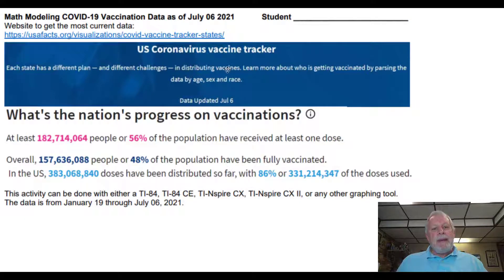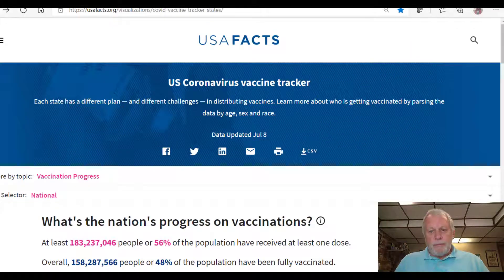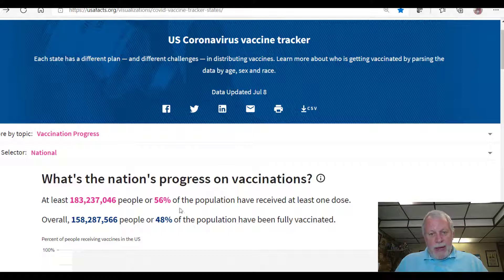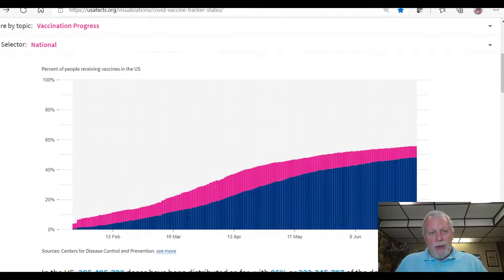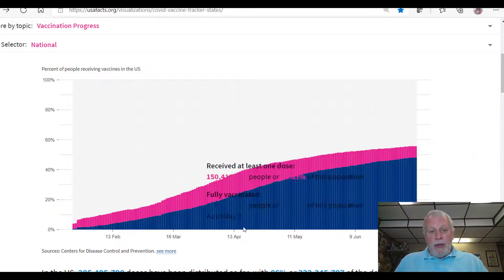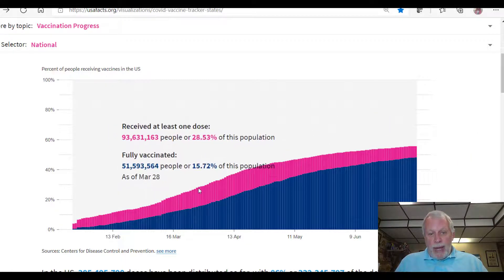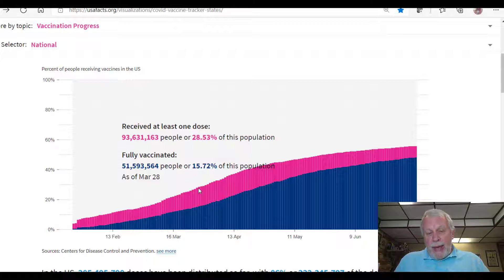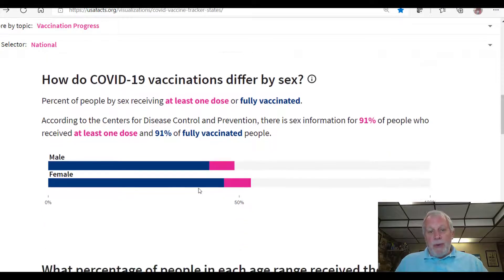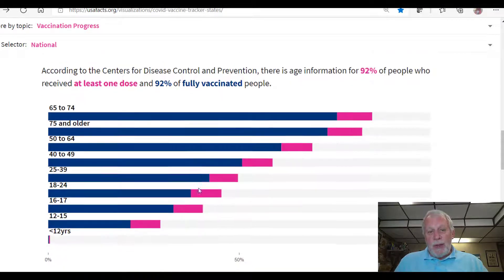So the first stop is this is where I got the data from. This is the website in case you'd like to go there. A lot of interesting information on that website. Let me just take you there so you can see it. Here we are at this website. The nation's progress on vaccinations, numbers are here and the percentages are here. Nice looking graph, which is where I got the data from. How you get the data is you go to a particular date and it gives you one dose, fully vaccinated percentages and so on. So I went ahead and did all that and put that data into spreadsheets and other places so that you didn't have to do that. But there's also other data that's there that's interesting.